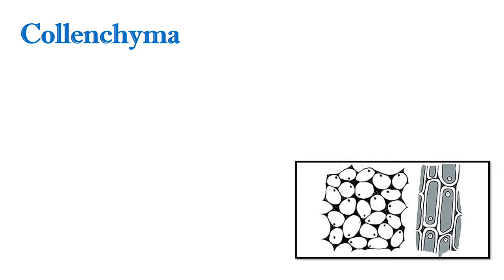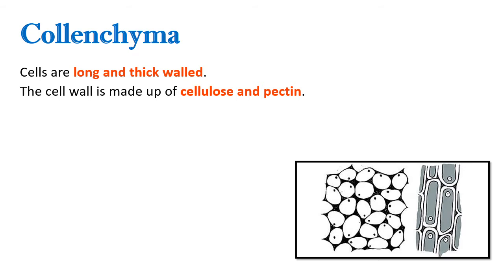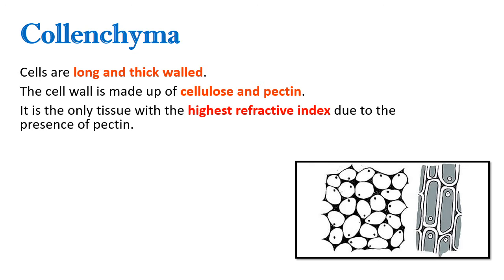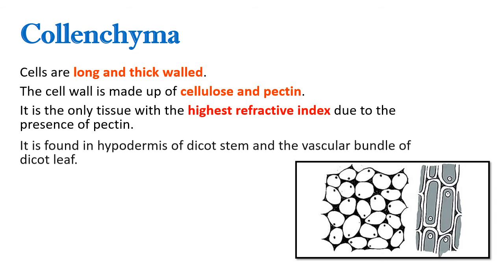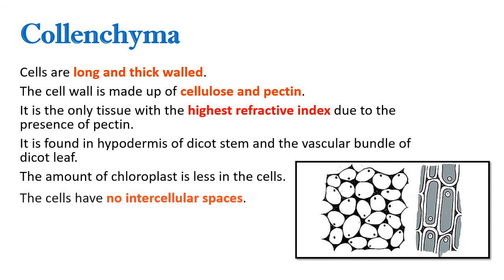The second kind is colenchyma. Cells of colenchyma are long and thick-walled. The cell wall is made up of cellulose and pectin. It is the only tissue with the highest refractive index due to the presence of pectin. It is found in the hypodermis of dicot stem and the vascular bundle of dicot leaf. The amount of chloroplast is less in the cells, and the cells have no intercellular spaces.